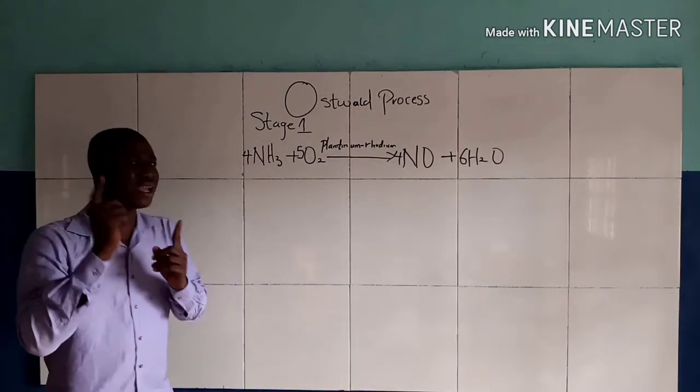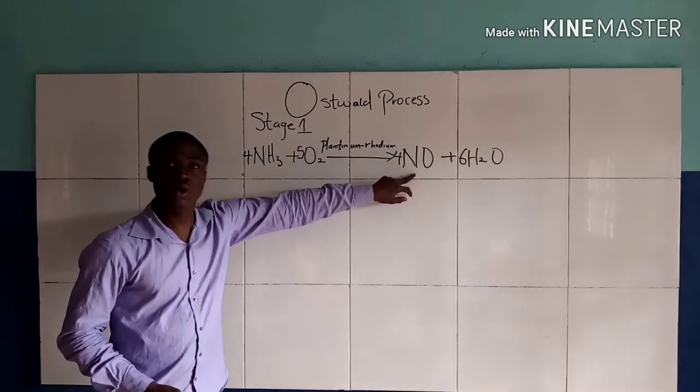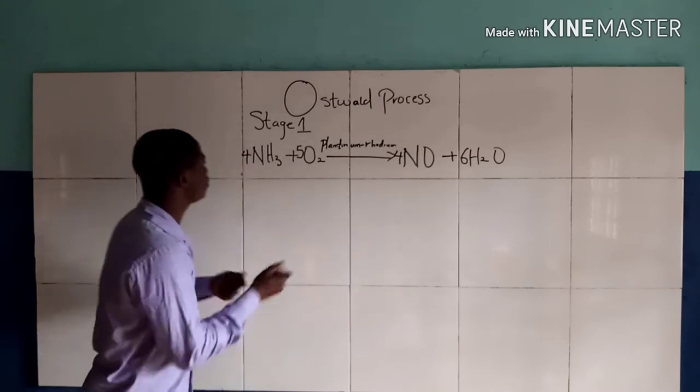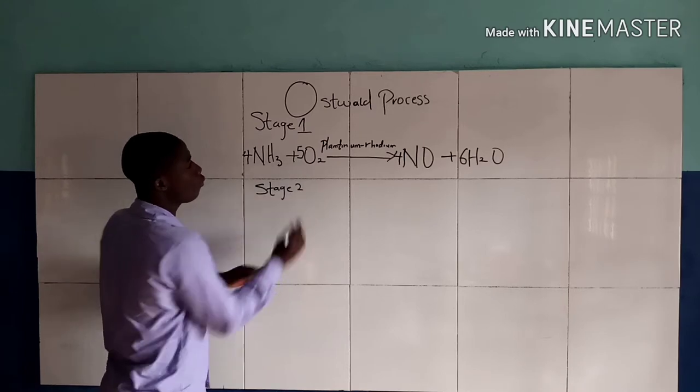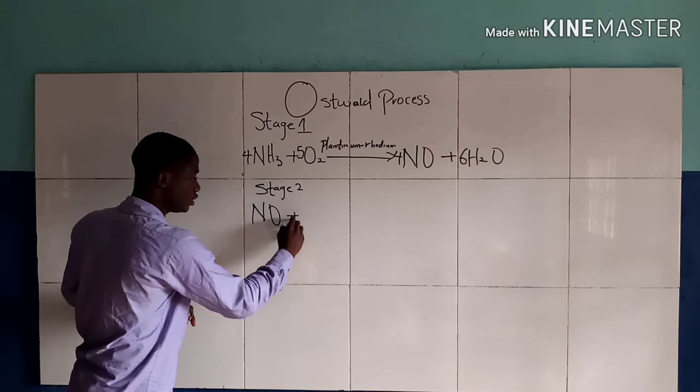Now, the second stage of the Ostwald process is reaction of nitrogen 2-oxide with another molecule of oxygen. So, here is the second stage. When nitrogen 2-oxide reacts with another molecule of oxygen, we get nitrogen 4-oxide, that is NO2.